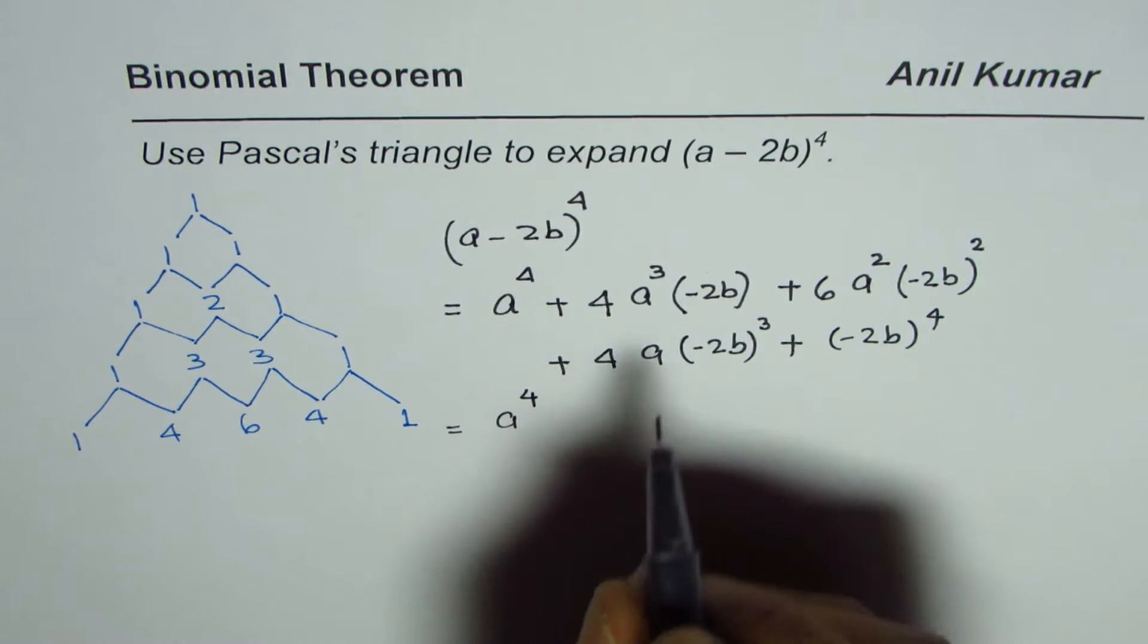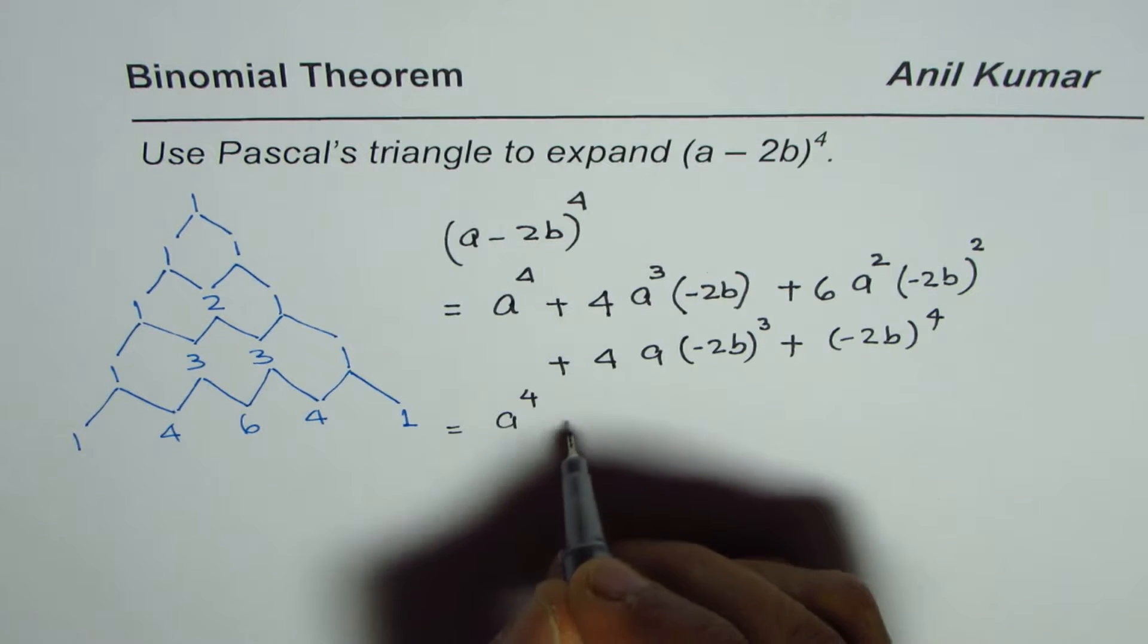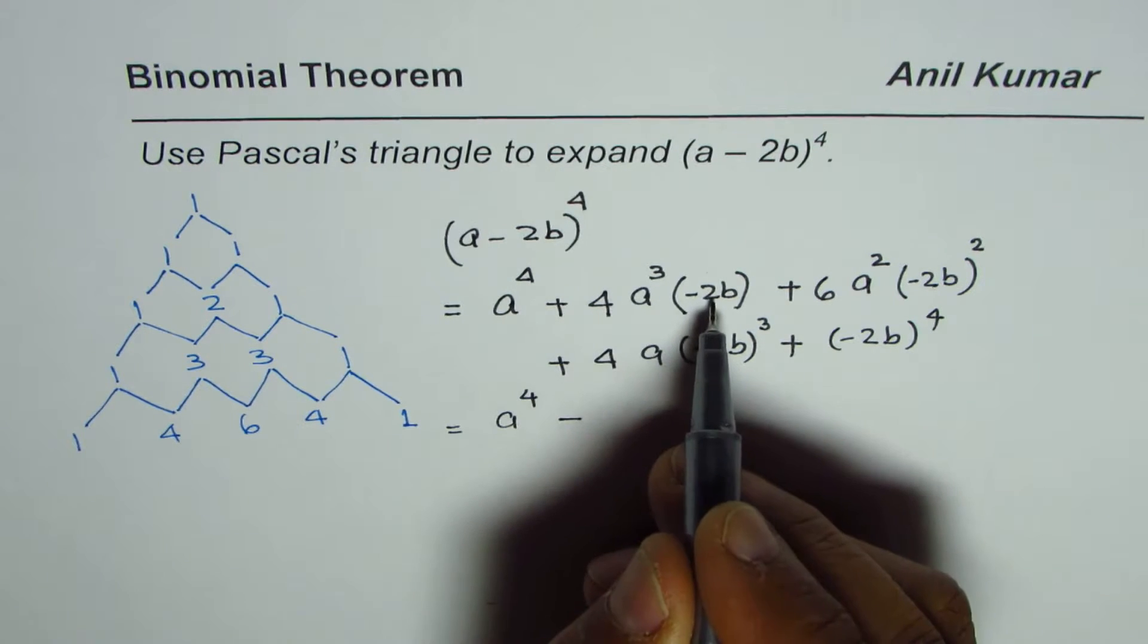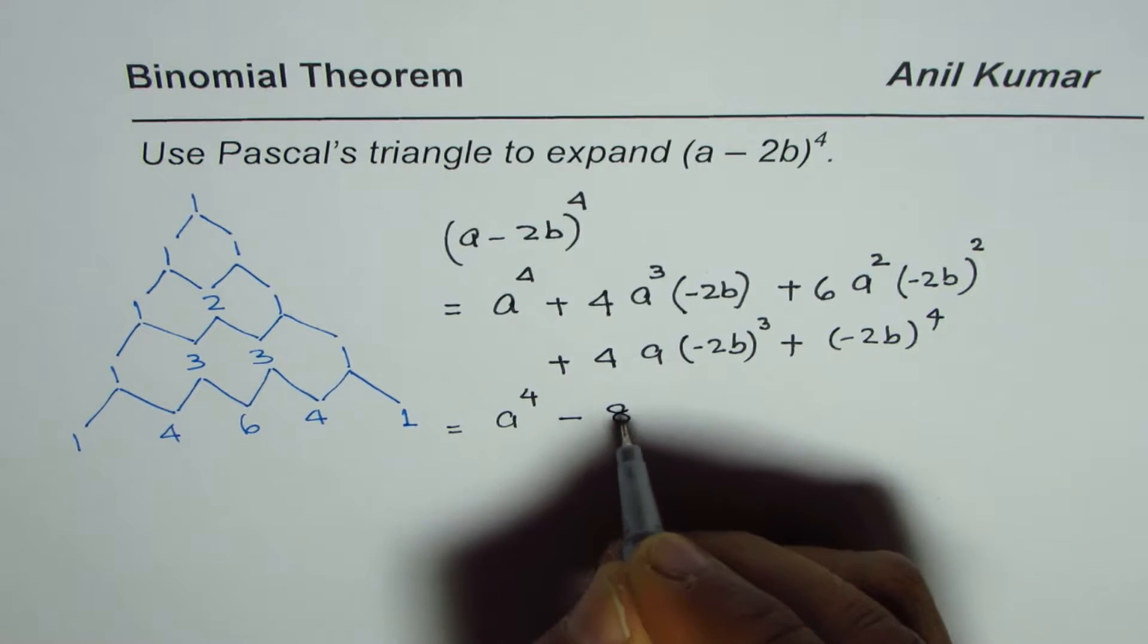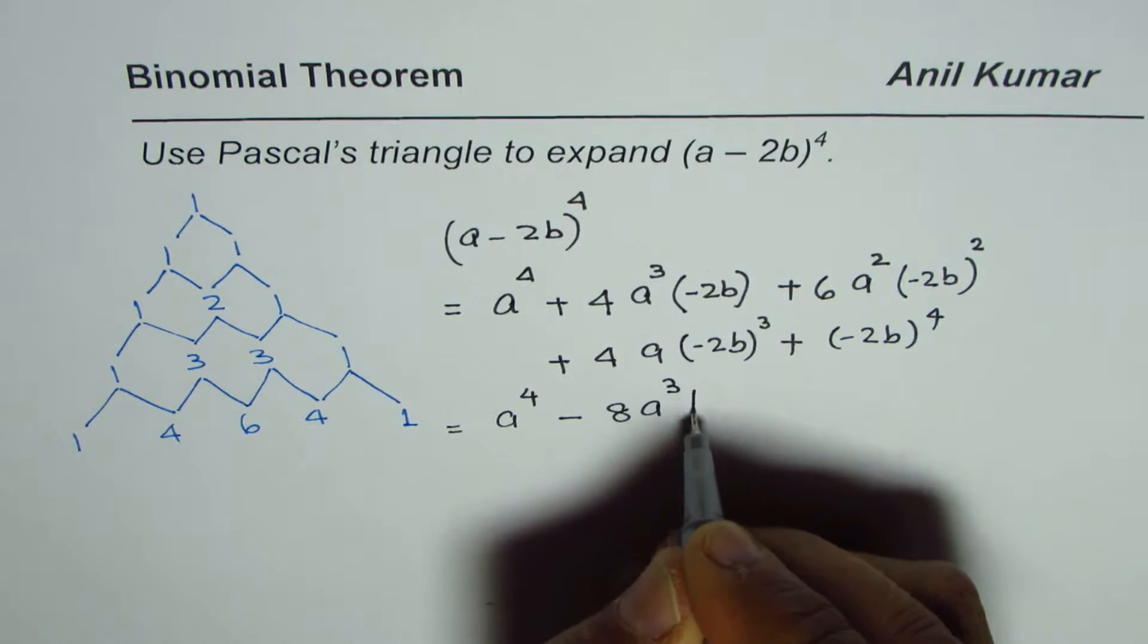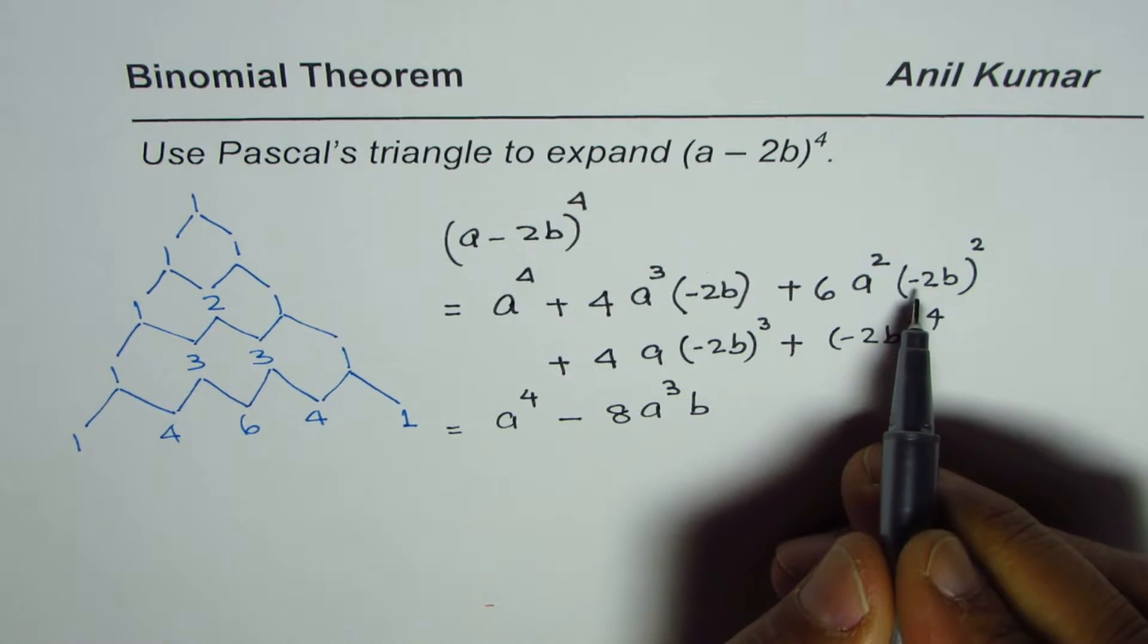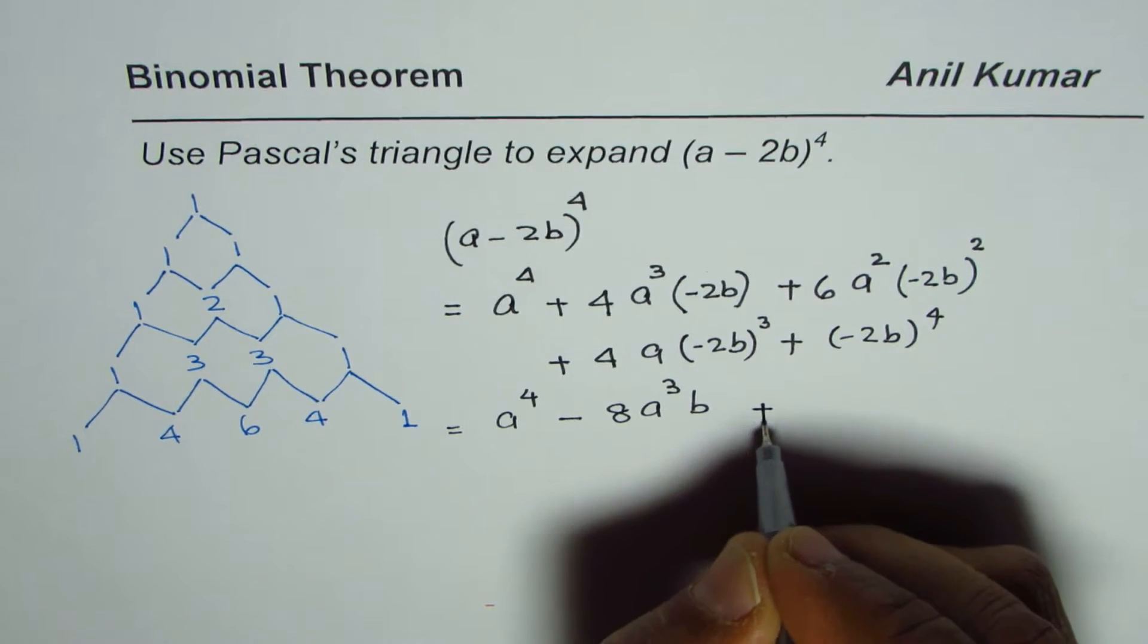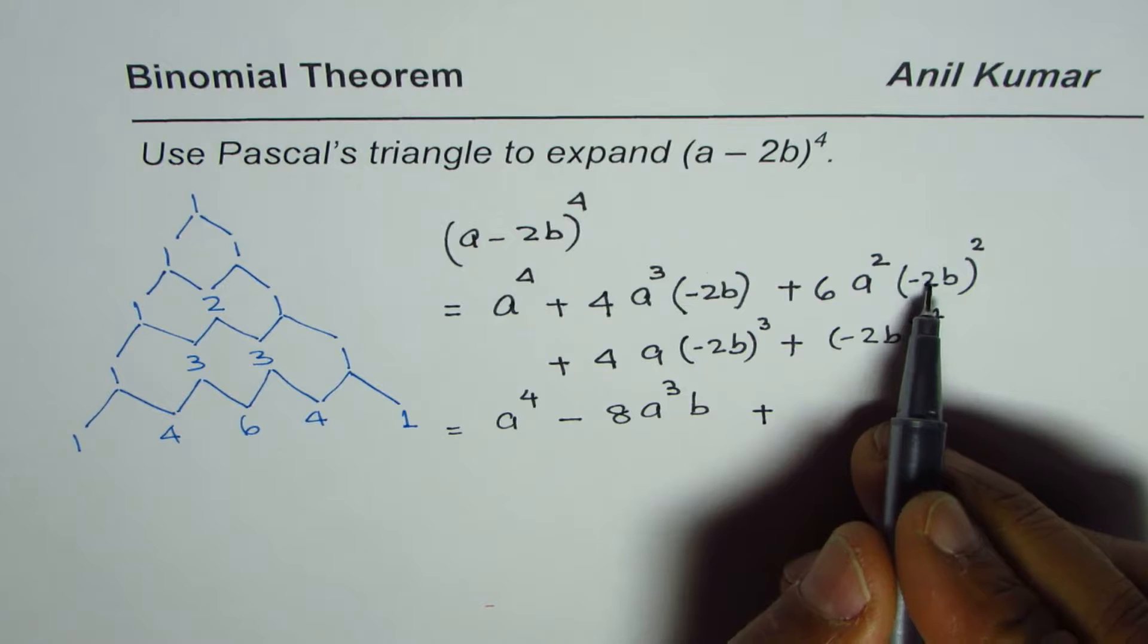power of 4. This is minus, so the sign becomes minus. 4 times 2 is 8, giving −8a^3b. Here, (−2b)^2 is positive, so we have positive. 6 times 2^2 is